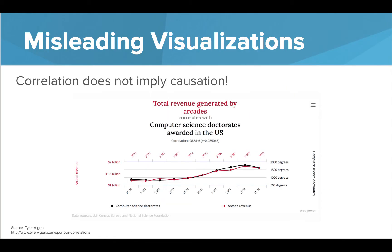Lastly, correlation — a connection between two things — does not imply causation, or the act of causing something. When we look here, we have the total revenue generated by arcades, and it does correlate with computer science doctorates awarded in the US; they seem to grow at the same rate. But this doesn't mean that they cause each other. We don't know if those computer science doctorates are going to arcades to celebrate their new degree — it's not something we can pull from this data.